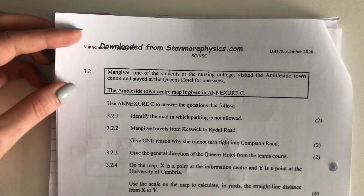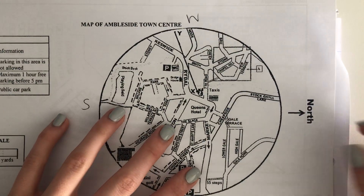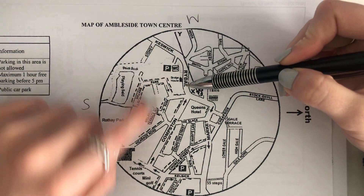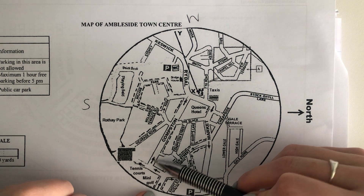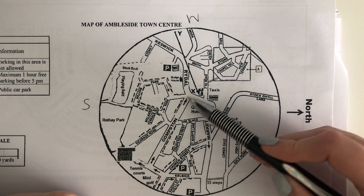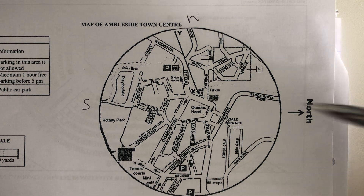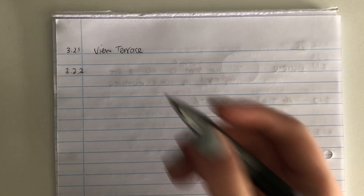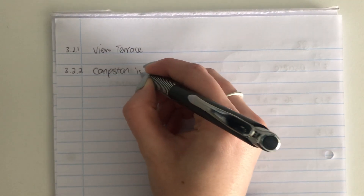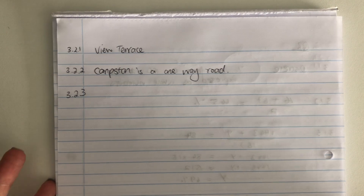Let's look at the next question. It says Mungiwe travels from Keswick to Rydal Road — give her a reason why she cannot turn right into Comston Road. So here's Keswick, she's going on Rydal, and here's Comston Road. The arrows on the map indicate the flow of traffic, but these arrows are only in one direction — not two. That means Mungiwe can't turn down into Comston because Comston is a one-way road. If she turns right into Comston she's going to be going into oncoming traffic, which is dangerous and illegal. So you would write: Comston is a one-way road. That is sufficient, though you can add that she would turn into oncoming traffic.